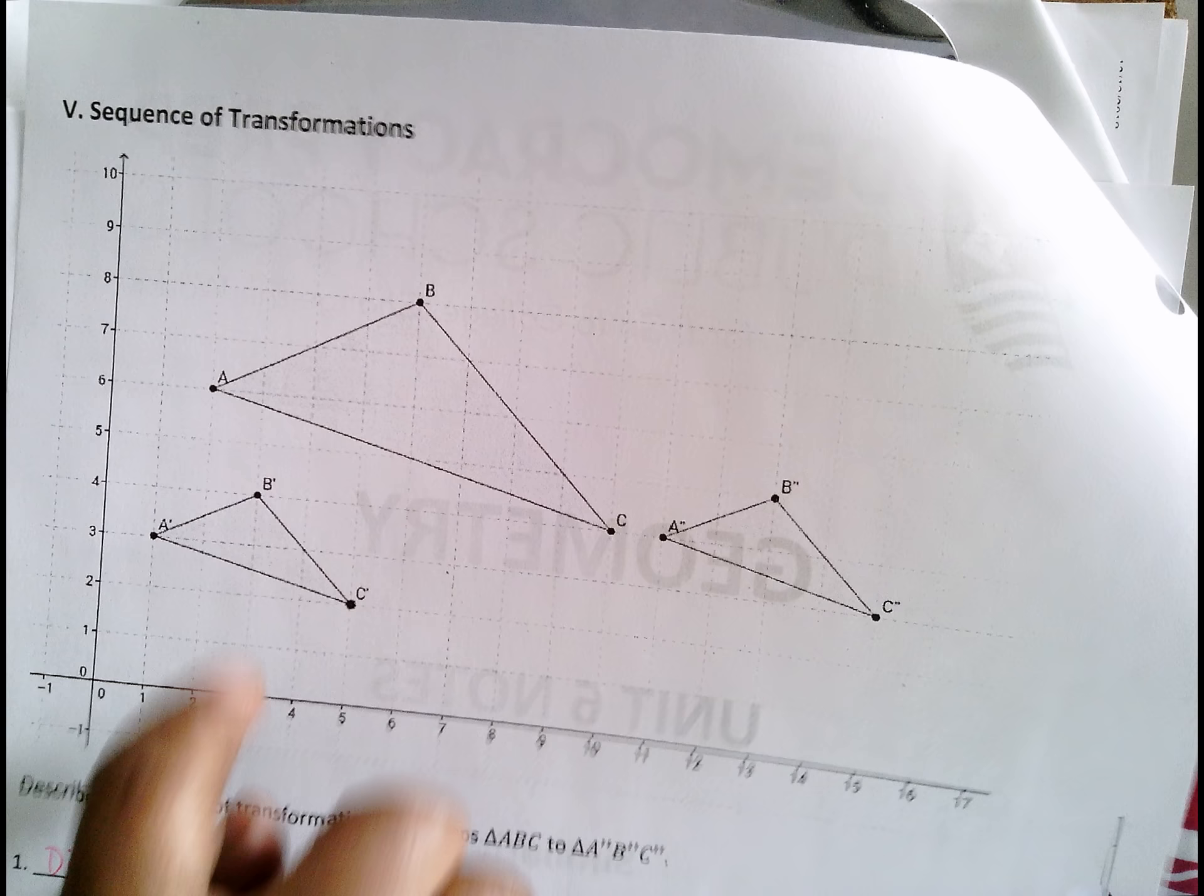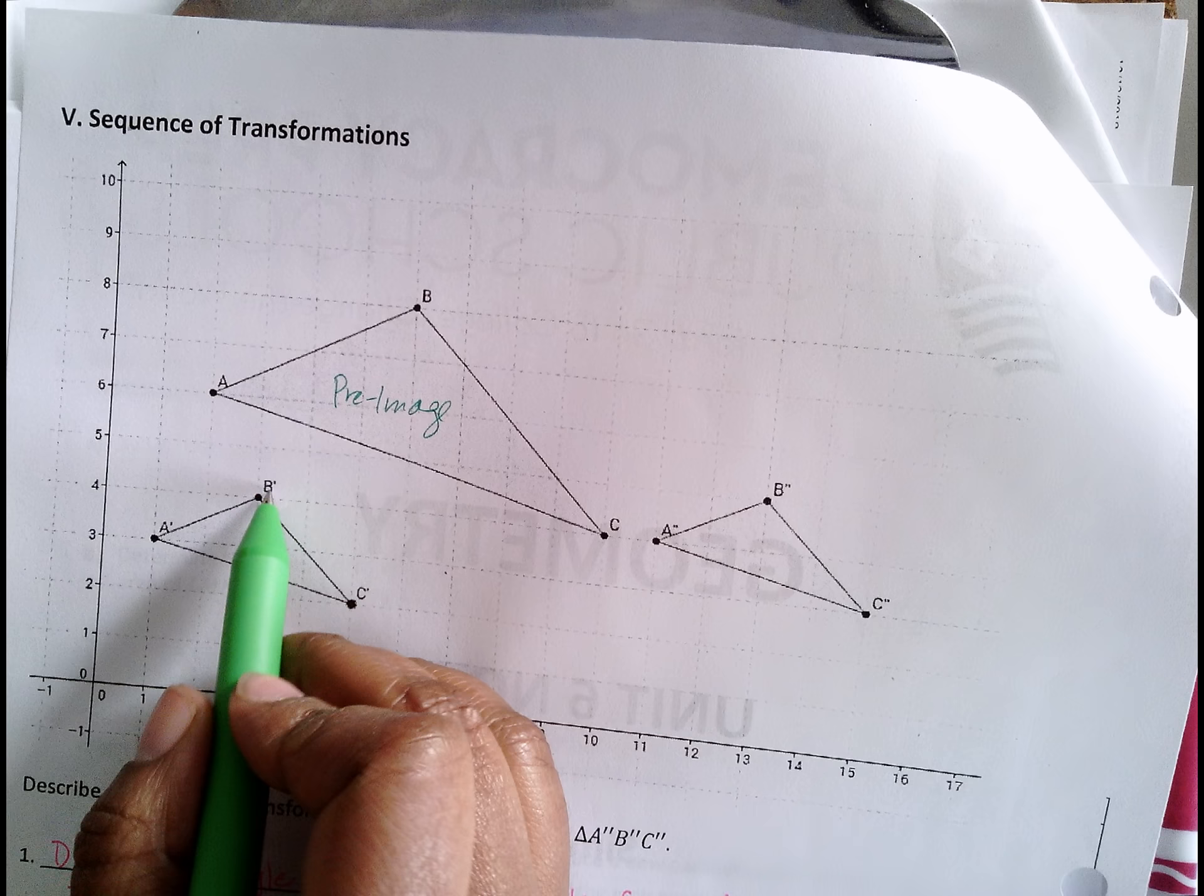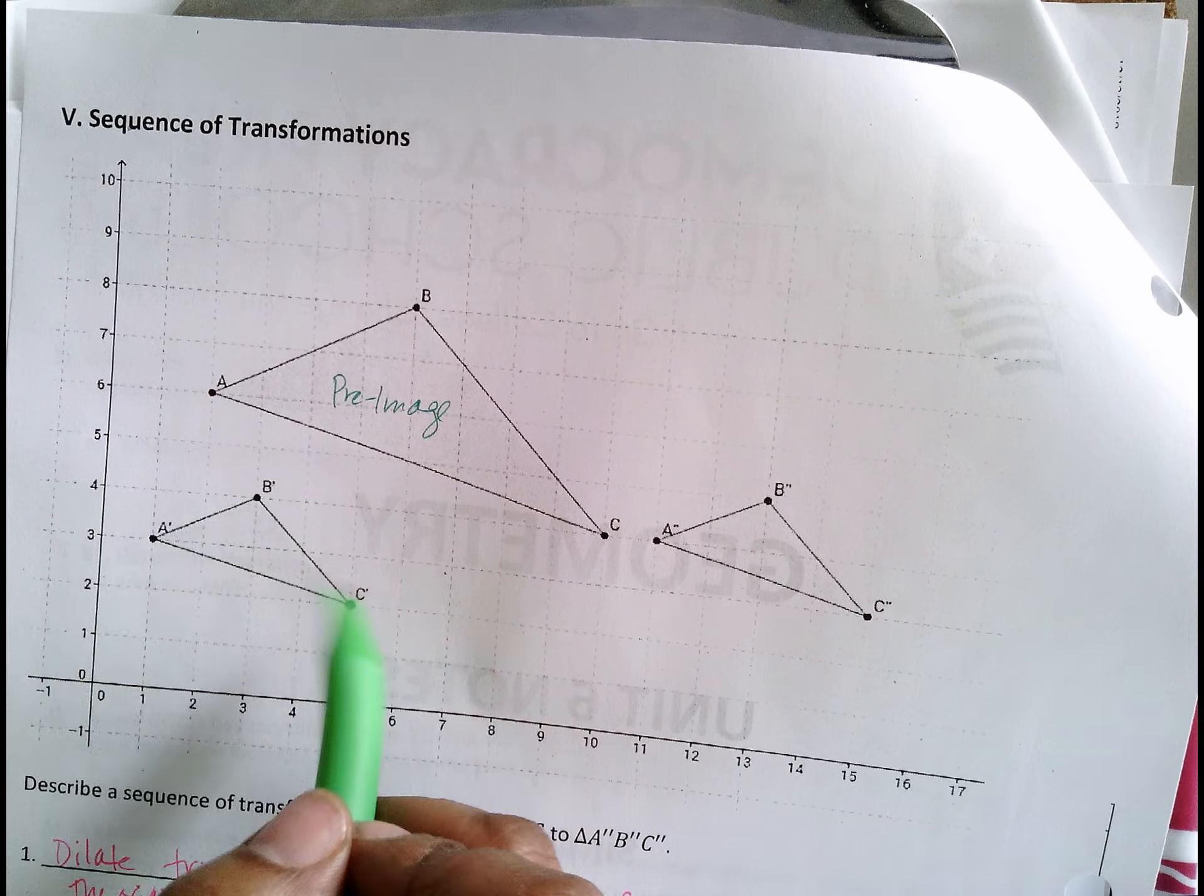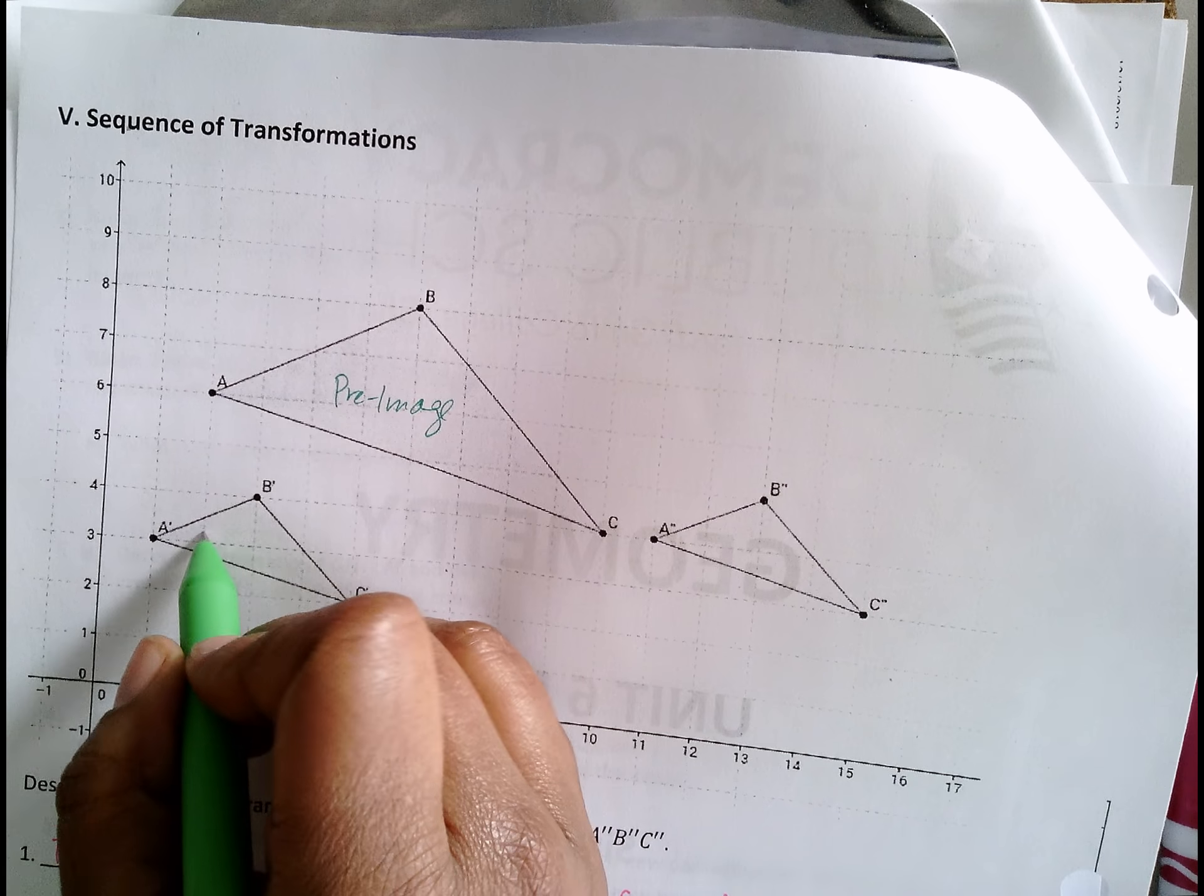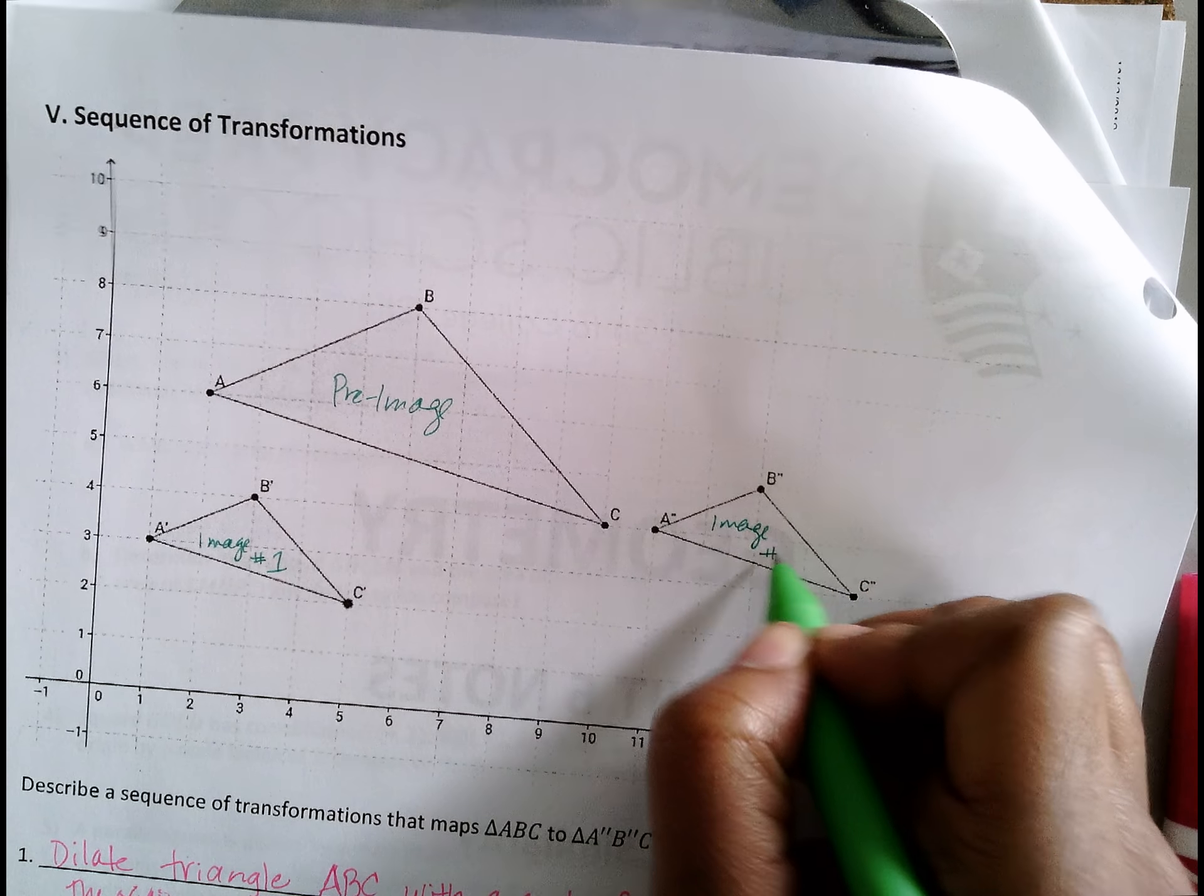And you see these three images here. This is the pre-image because it doesn't have any of those, excuse me, not tick marks. These are called prime. This is prime notation. This has double prime notation. So this is the pre-image. This is the image one, I'll call it. And this is image two.